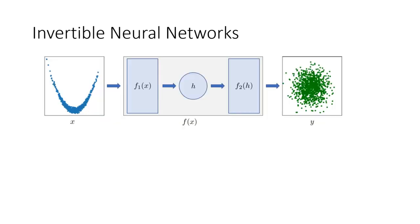Apart from generative modeling and uncertainty quantification, invertible neural networks offer another big advantage which, as the name suggests, is their invertibility. What that means is that you can actually recompute the input from the output of your network, so you do not have to, in principle, track any variables.